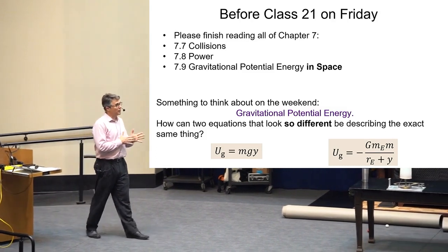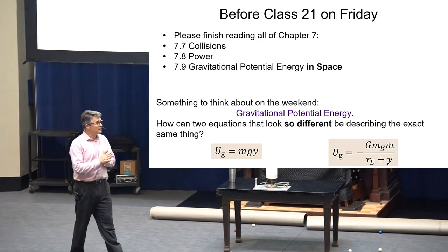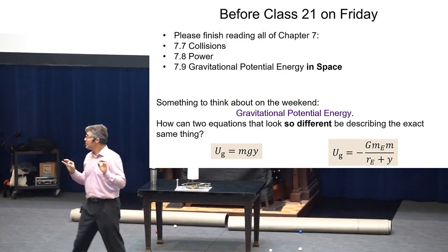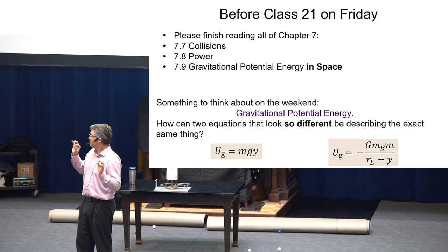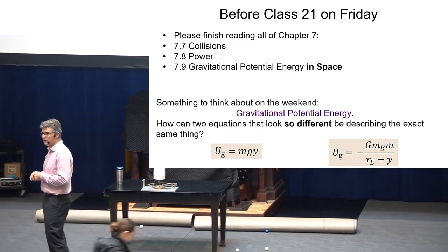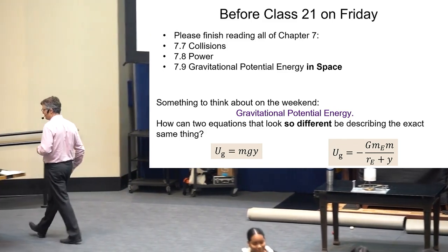So I'll do this example next time. Before Friday, maybe finish off with chapter 7. I'm going to post a problem set on this stuff. And let's think about gravitational potential energy. M g y is the same somehow as negative G m m over R. And so how could those two equations that look different be actually the same? I'll talk about that on Friday. See you then.